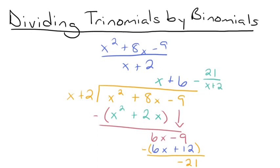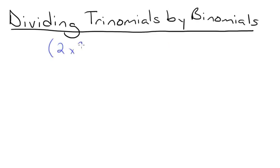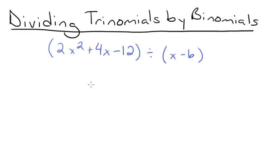So our answer for this problem is x plus 6 minus 21 over x plus 2. Before we go, I want to try one last example: 2x squared plus 4x minus 12 divided by x minus 6. We're going to set up our long division problem just like we have been, so we'll have 2x squared plus 4x minus 12 divided by x minus 6.